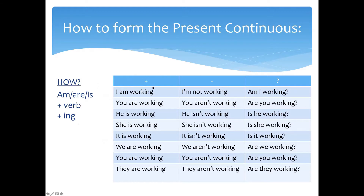Here the full sentences are illustrated. In the first column, the affirmative positive sentence: I am working, you are working, he is working, she is working, it's working, we are working, you are working, they are working. For the negative form: I am not working. We just add 'not' between the be verb and the ing verb.